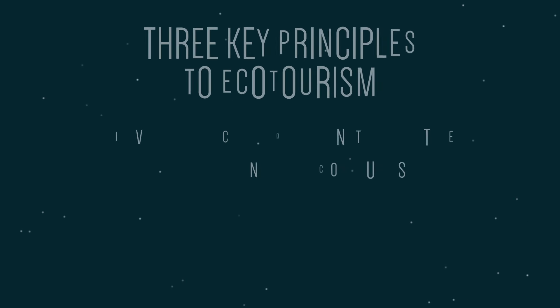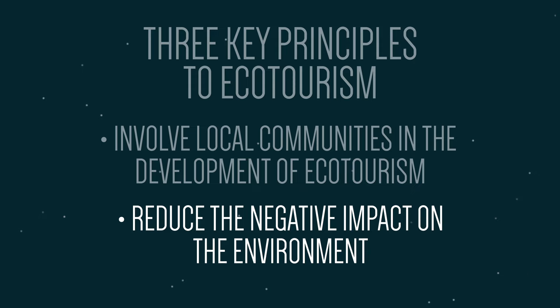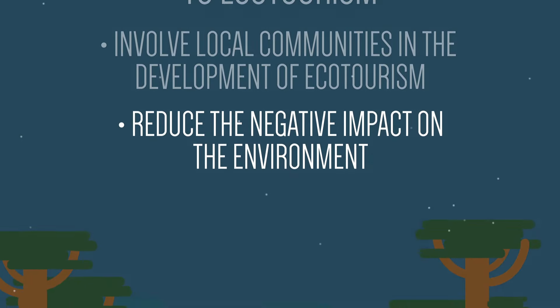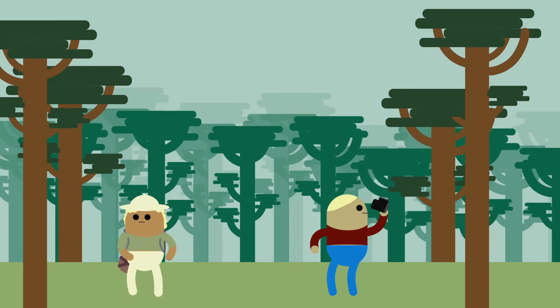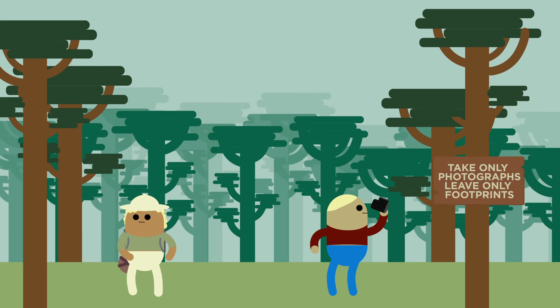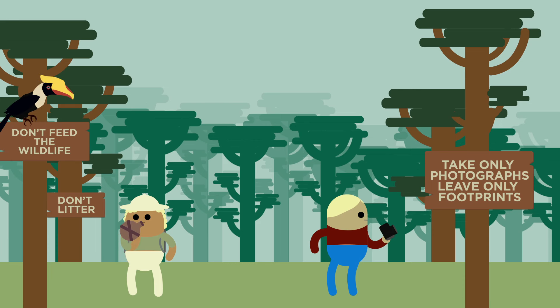The second principle is to reduce the negative impact on the environment. Ecotourism often involves visits to remote and environmentally sensitive natural areas such as forests, dunes or glacial areas. Visitors undertaking these trips should try to make sure that they follow any rules regarding litter and wildlife disturbance, and ensure that personal use of resources such as water is sustainable.